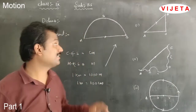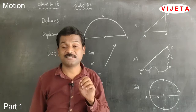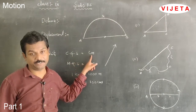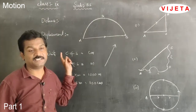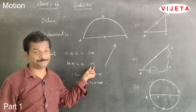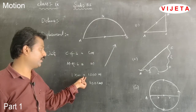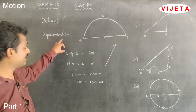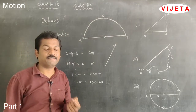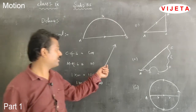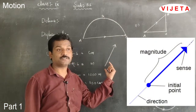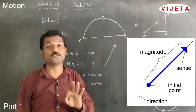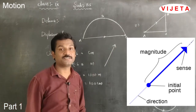Distance and displacement both have the same units. In the CGS system, distance or displacement is measured in centimeters. In the MKS or SI system, it is measured in meters. One kilometer equals 1000 meters; one meter equals 100 centimeters. We can differentiate them using the vector quantity symbol. A vector is represented with an arrow mark — the arrow has a head and a tail. The length of the line segment gives the magnitude and the arrow gives the direction.